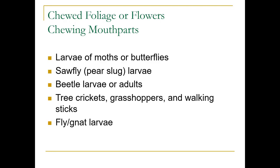Some insects have chewing mouthparts, and these include the larvae of moths or butterflies, caterpillars, sawflies — which are not flies, also called pear slugs or rose slugs, though they're not slugs either, and it's only the larvae. They're related to wasps. Beetle larvae or adults all have chewing mouthparts, as do tree crickets, grasshoppers, and walking sticks.